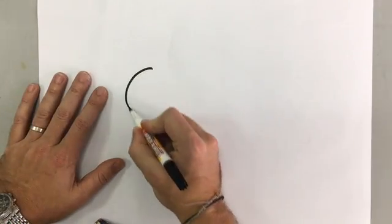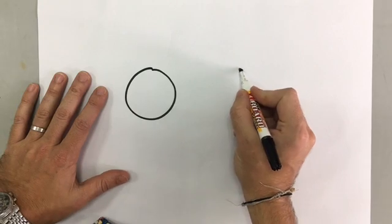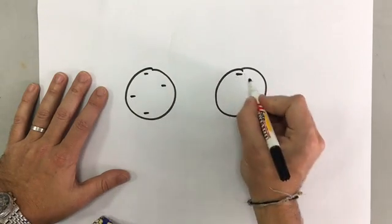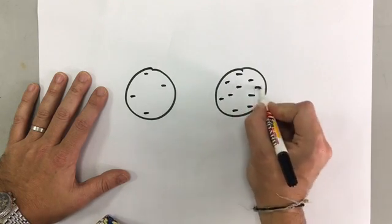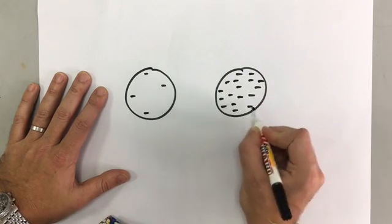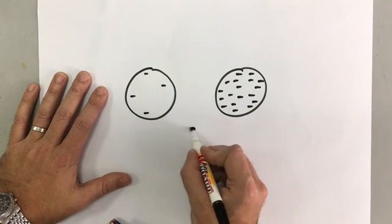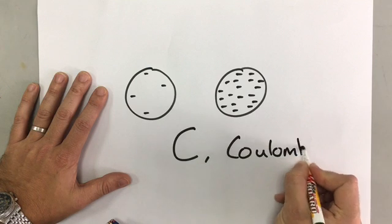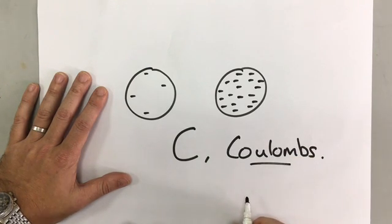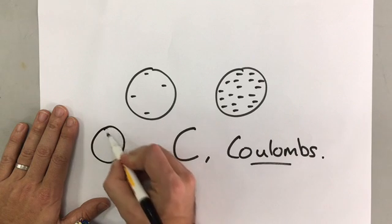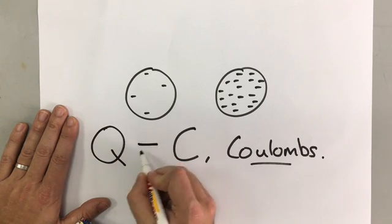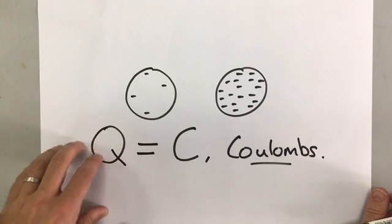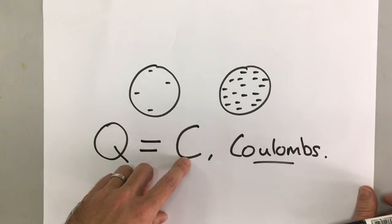What if you have something that has more electrons than something else but both are still negatively charged? We have a way of measuring the amount of charge on something — we measure charge in coulombs, which is a capital C. Q is the letter we use in equations for charge, but C is the unit, coulombs.